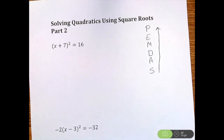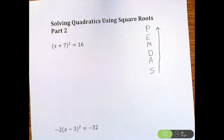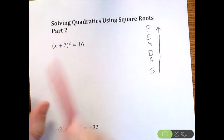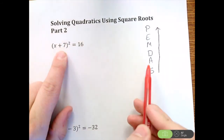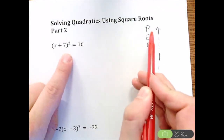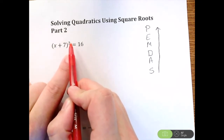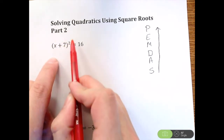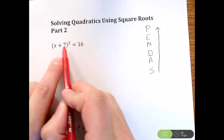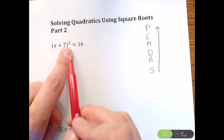In our first problem, we have (x + 7)² = 16, with the goal of getting x by itself. I see a plus seven, which involves addition and subtraction, but the plus seven is inside parentheses — that should be the last thing we do. Outside the parentheses I have this exponent, so since the plus seven is inside parentheses, we actually want to get rid of the square first.